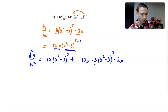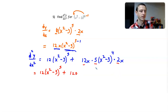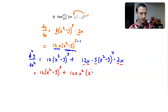From here, I need to multiply all of these terms together. 12 times 5 times 2: 5 times 2 is 10, times 12 is 120. So I'm going to get 12 times x squared minus 3 raised to the 5th, plus 120. I also have x times x, which is x squared, times x squared minus 3 raised to the 4th.